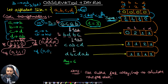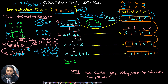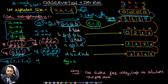For transformation T2 with state [0, 2, 1, 1]: zero a's contribute nothing, two b's contribute two c's, one c contributes one d, and one d contributes one a and one b. So next_frequency = [1, 1, 2, 1]. This becomes the new current state: [1, 1, 2, 1].